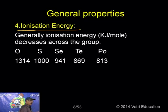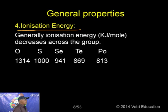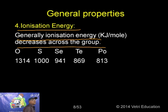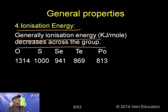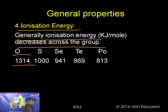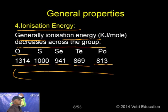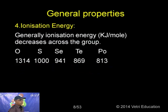Ionization energy is the energy required to remove one electron from the outermost orbital of a neutral gaseous atom. It is expressed in kJ/mol. Ionization energy decreases down the group because atomic size increases. Values in kJ/mol: Oxygen 1314, Sulphur 1000, Selenium 941, Tellurium 869, Polonium 813.